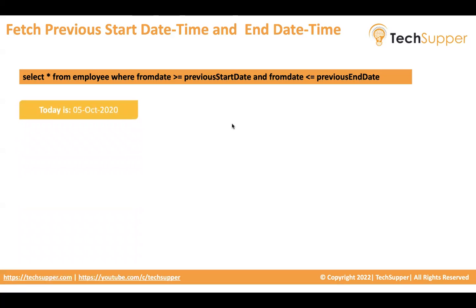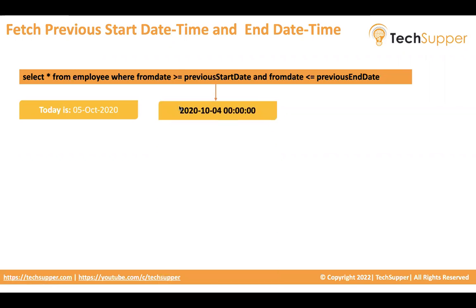For example, today is 5th of October 2020. When you run this interface today on 5th of October 2020, you want to get the data of the last date. The previous start date should be like 2020-10-04 00:00:00 — the start time of the previous date — and the end should be 2020-10-04 23:59:59, meaning the exact data of the last date.